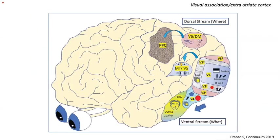Visual input first reaches V1, where initial processing occurs — judging basic position of the visual stimulus and orientation of borders. From V1, the visual stimulus diverges into two pathways: the dorsal stream (the 'where' pathway), which conveys visual-spatial information about where an object is located, and the ventral stream (the 'what' pathway), which conveys object identity.